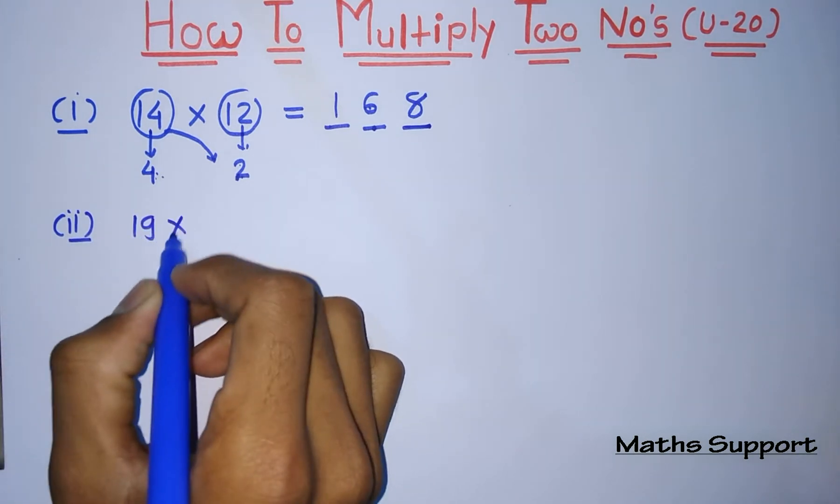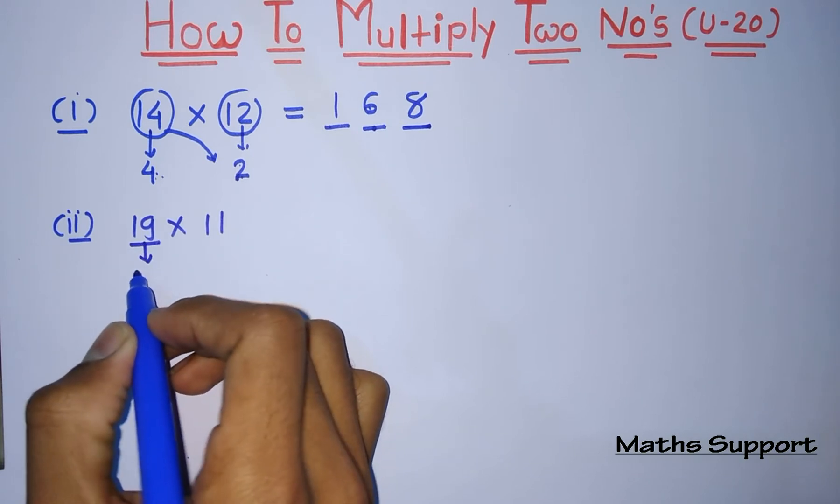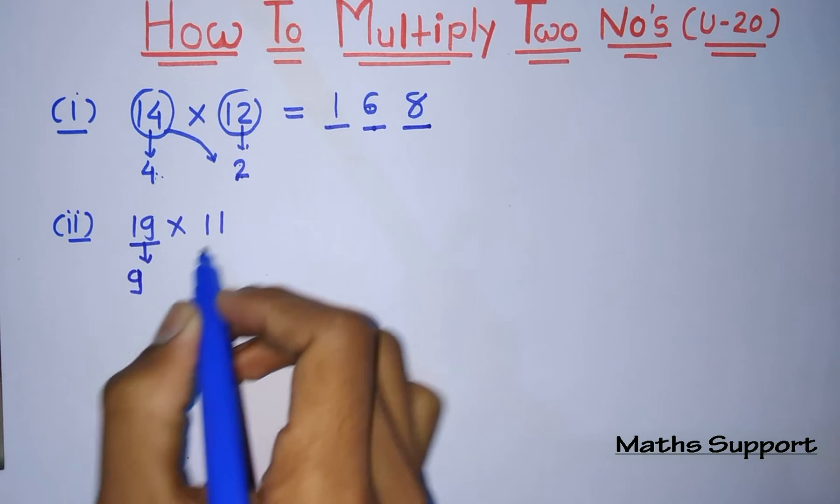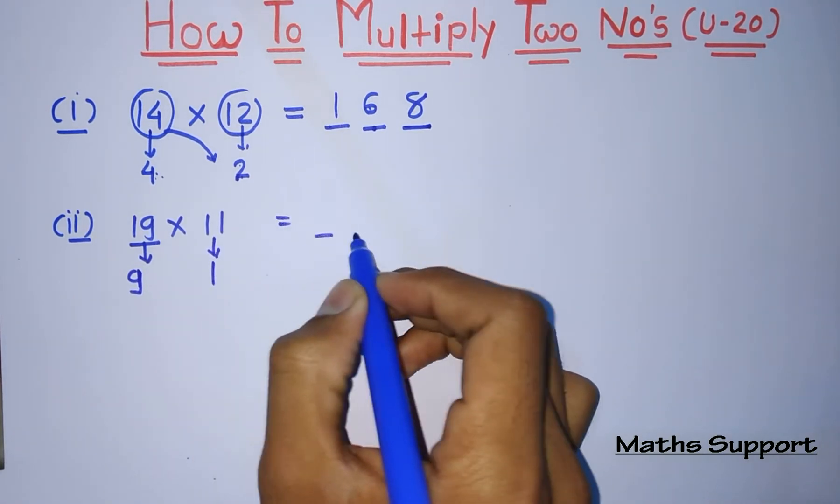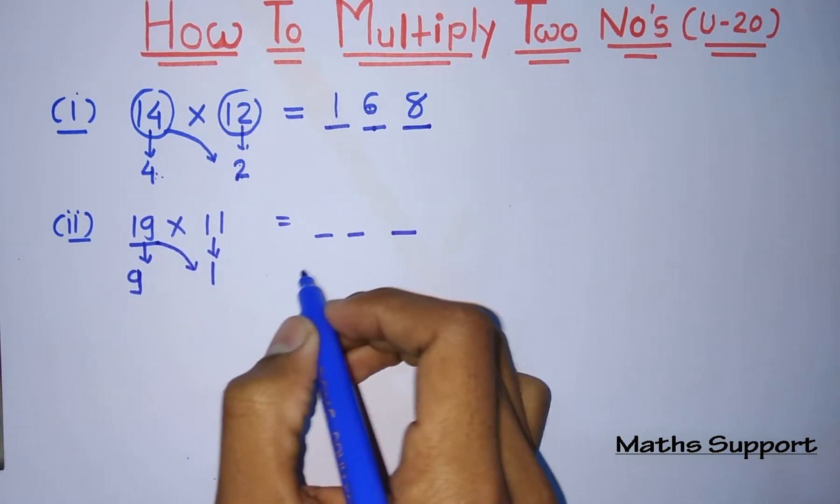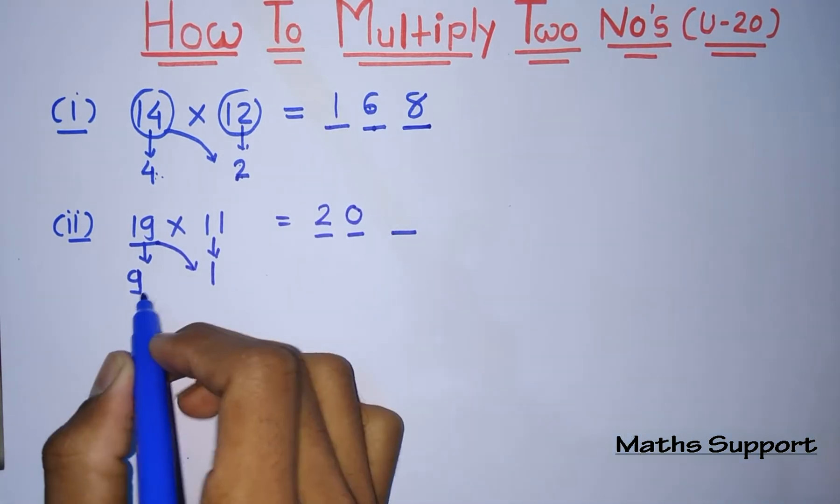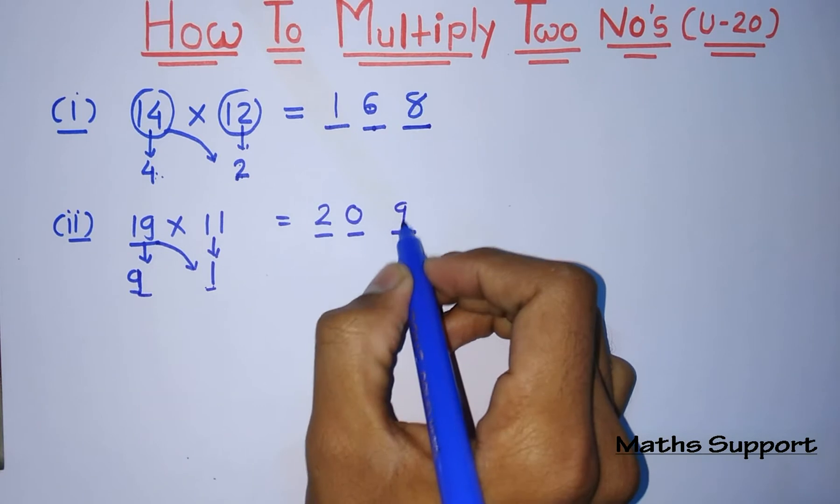First process is find out how far it is from 10. So this is 9, this is 1. So for the first two digits, add these two numbers. 19 plus 1, that is 20. And for the last digit, multiply these two numbers, that is 9 into 1 is 9. So 19 into 11 is equal to 209.